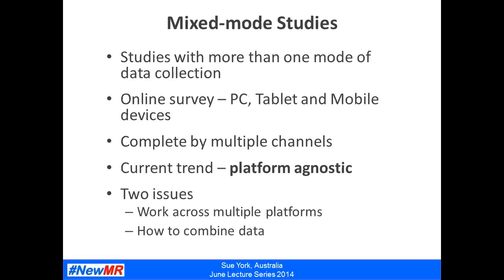Mobile research also uses mixed mode studies — studies where we're using more than one mode of data collection. A simple example is an online survey where some participants complete it using a PC, whereas others use a tablet or mobile device. Alternatively, an individual participant can complete that survey using multiple channels — somebody might start an online survey on their mobile phone while out shopping, and then come home and complete another part on a PC. Sometimes you might design it to take advantage of different channels, and sometimes you're just taking into consideration that people might like to complete surveys on different devices at times convenient to them.